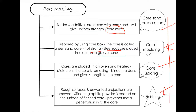For core baking, the cores are placed in an oven and heated. The moisture in the core is removed, the binder hardens, and strength is improved. The green sand core component is dried with the support of the core oven.